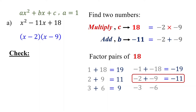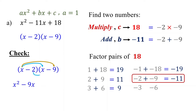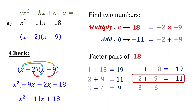To check if our answer is correct, we just need to FOIL this. x times x is x squared. x times negative 9 is negative 9x. Negative 2 times x is negative 2x. Negative 2 times negative 9 is 18. Then combine like terms. This is the original trinomial, so our answer is correct.